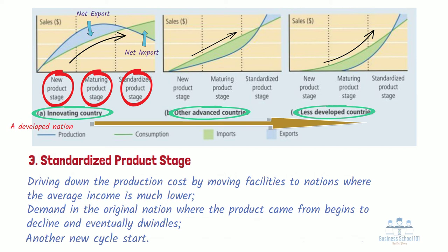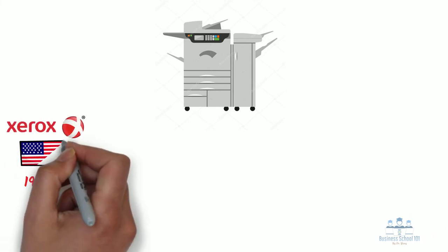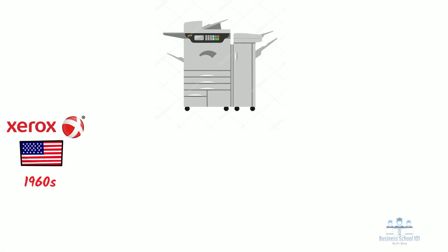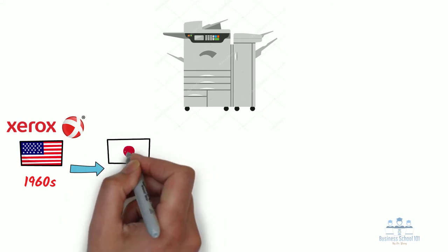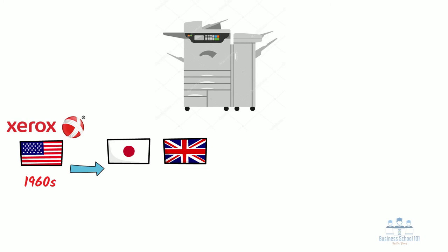Historically, the product lifecycle theory seems to be an accurate explanation of international trade patterns. Let's use a photocopier as an example. The photocopier was first developed in the early 1960s by Xerox in the United States and sold initially to American users. Originally, Xerox exported photocopiers from the United States primarily to Japan and the advanced countries of Western Europe. As demand began to grow in those countries, Xerox entered into joint ventures to set up production in Japan and Great Britain.